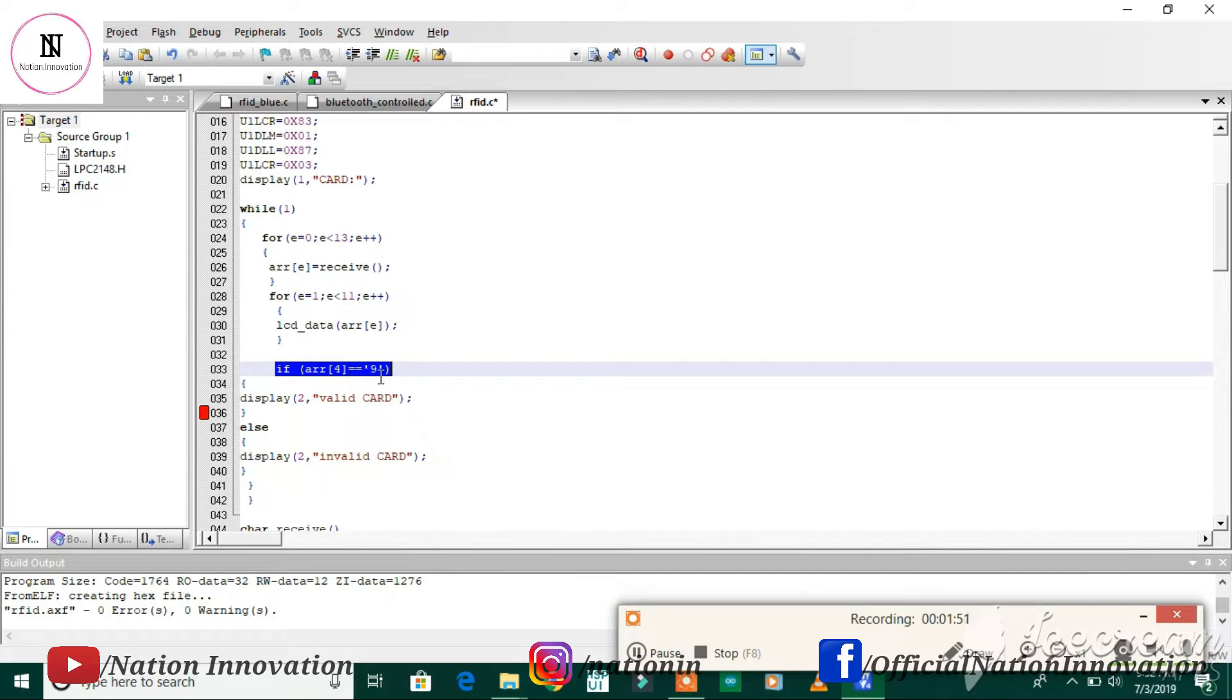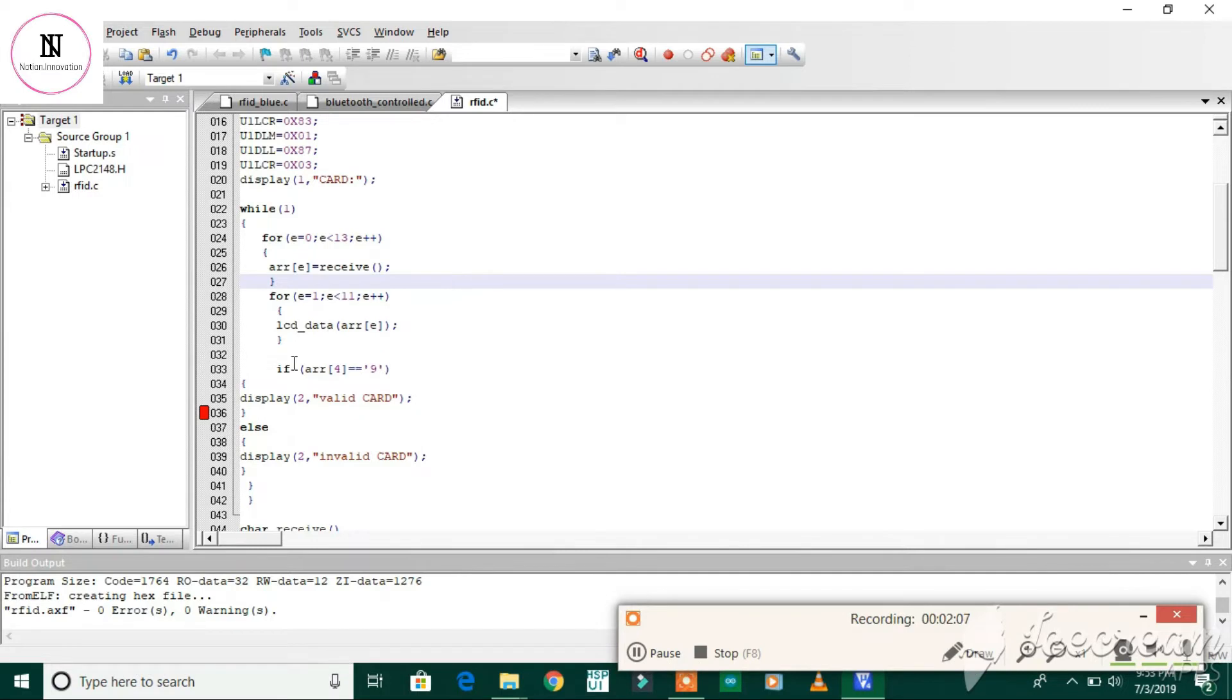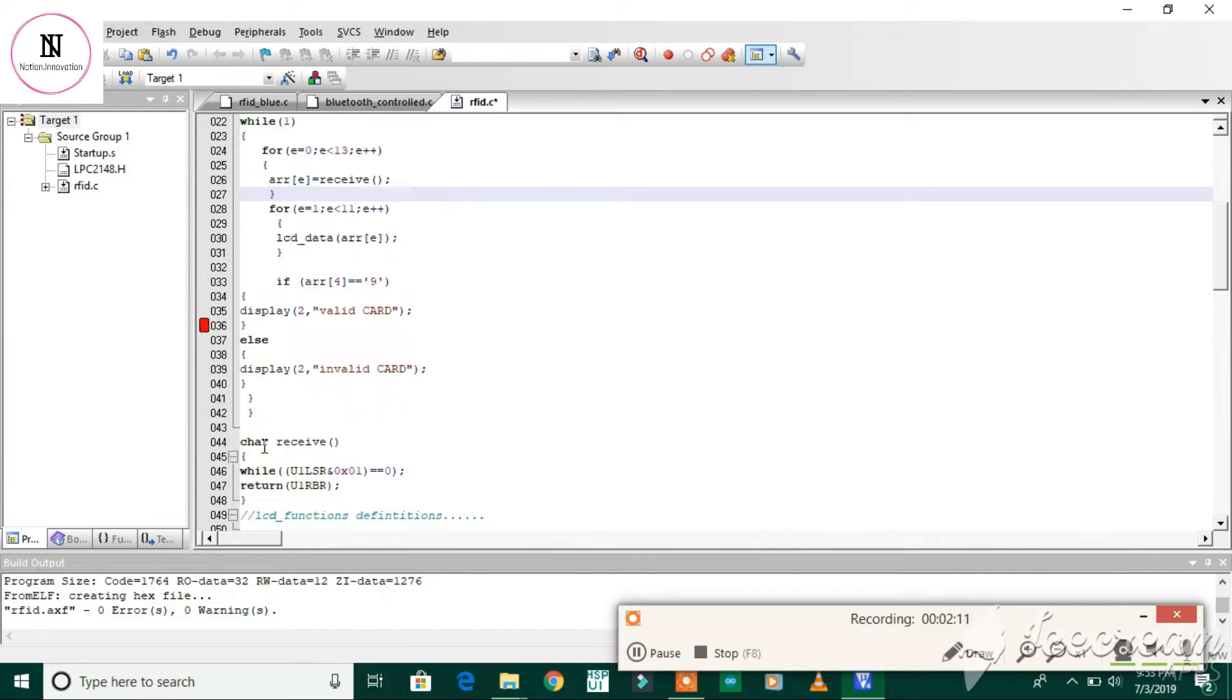if the fourth number equals 9, then it will be a valid card. This means if 9 is the fourth digit, the card is valid; otherwise, it's invalid. Using this condition, it checks whether the card is valid or invalid.